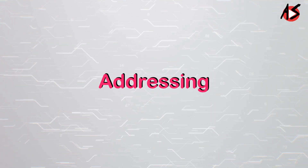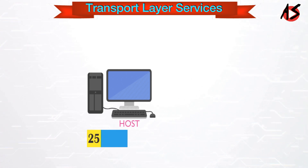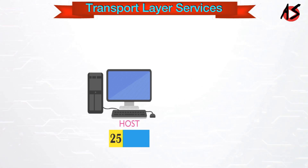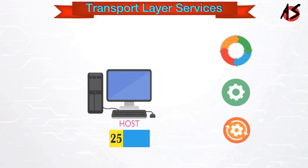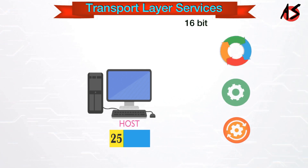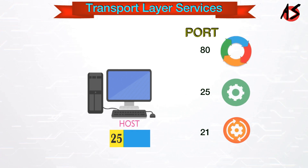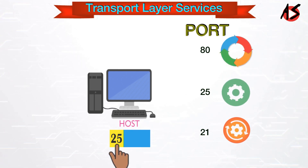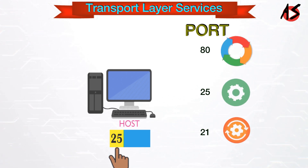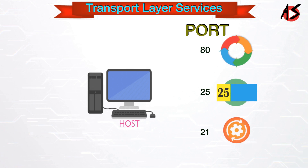Addressing: when a segment arrives at the destination host, it is possible that the host is running multiple processes. Therefore, the transport layer provides a 16-bit user address called a port number. Based on the destination port number in the transport layer header, the data is transferred to the correct process.